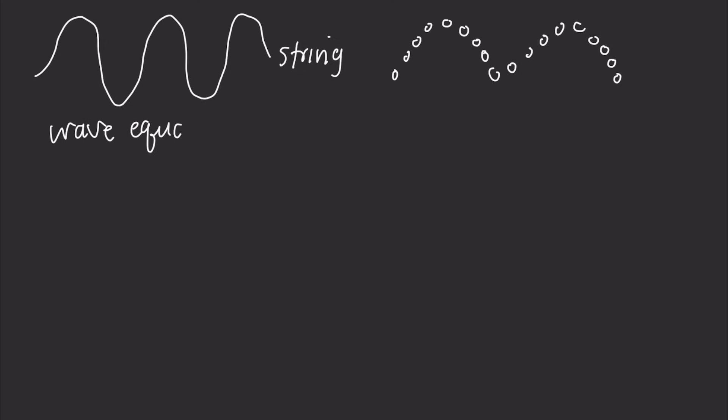To simplify the problem, let's consider a wave traveling along a string. We're going to zoom into a certain element of that string, which we'll call a string element. This string element has some small length l, and it has a differential mass element dm. We're working with differentials because we're looking at an infinitesimally small part of the string.